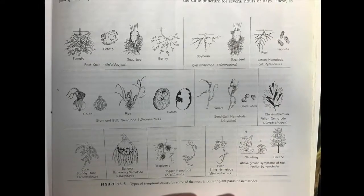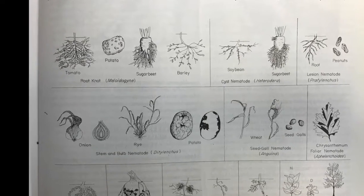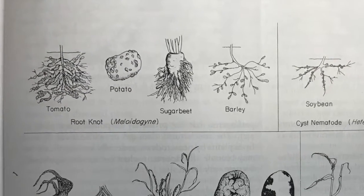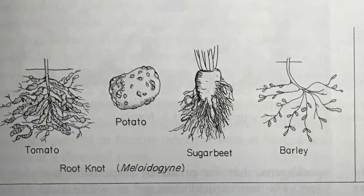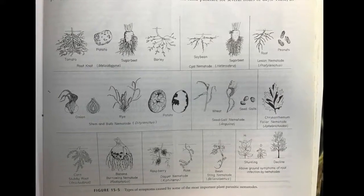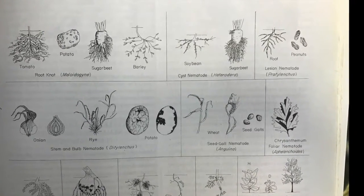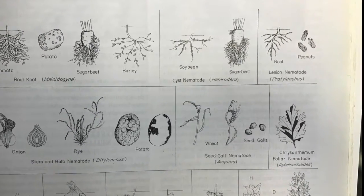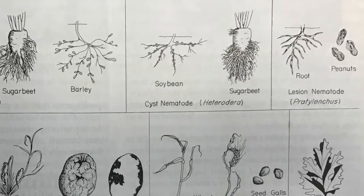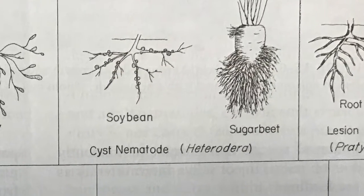The root knot nematode is extremely common, and it causes galls or knots as seen on the roots in these pictures. Cyst nematodes are also quite common, and they are characterized by the presence of cysts on roots and proliferation of roots in the production of shallow, bushy root systems, as seen here in the picture.